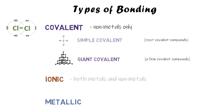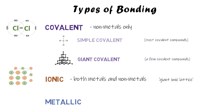Ionic bonding is not sharing electrons — it's giving and taking electrons. This happens when you've got both metals and non-metals together; you must have at least one metal and at least one non-metal. When they react together, they form a giant ionic lattice of positive and negative ions.